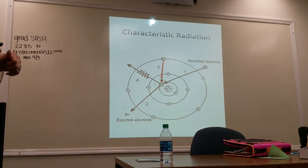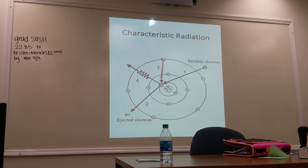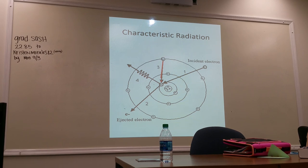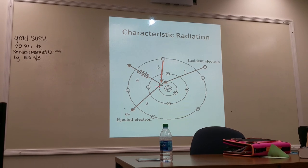Brems makes up about 90% of the x-ray beam energy. The other 10% is characteristic radiation. Characteristic radiation happens in the x-ray tube during x-ray production and also in the body. The incident or projectile electron from the cathode has a direct hit on an inner shell electron and knocks it out, creating an inner shell vacancy.